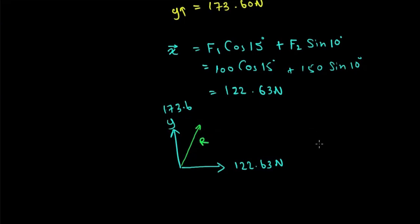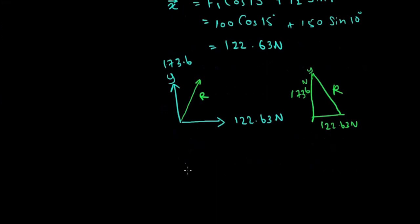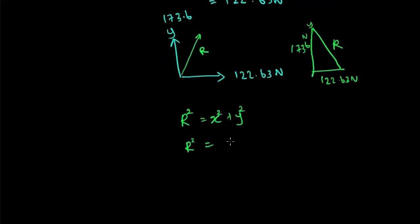Let's state it as R. Actually, it's just like a right-angled triangle. Here we have R and 173.6 Newton for Y direction and 122.63 Newton for X direction. To find out R, we can use the equation R squared is equal to X squared plus Y squared.